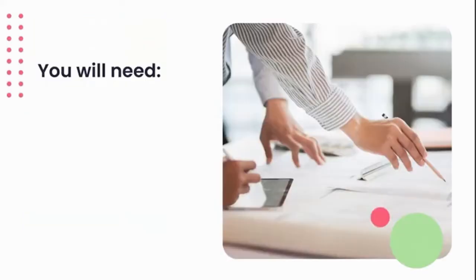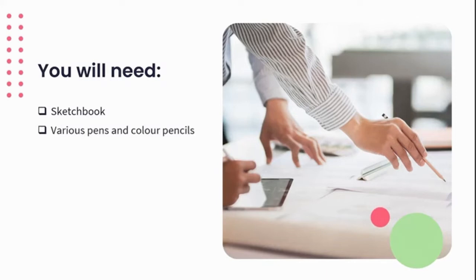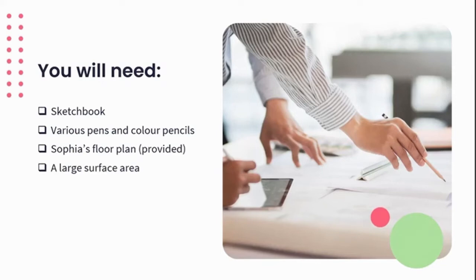As this is a practical lesson, you're going to need to grab a few things. We start off with our sketchbook — I hope it's starting to look really nice and full with all the challenge work you've been doing. You'll also need various pens and pencils, some coloring crayons, and Copic markers if you have them. You'll need a floor plan from Sophia's scenario, provided in your summary notes, a large surface area to sit and draw, and a nice quiet space.